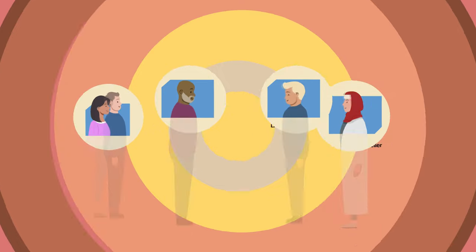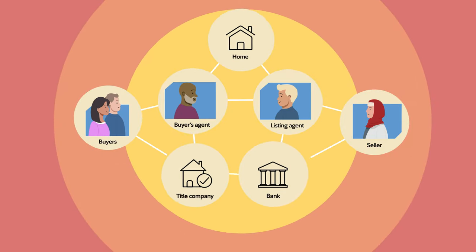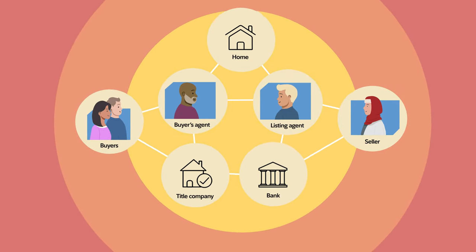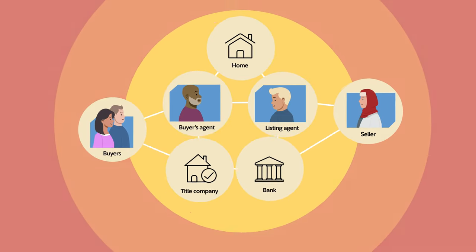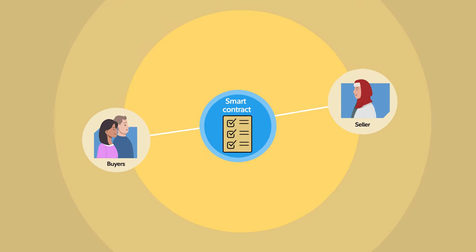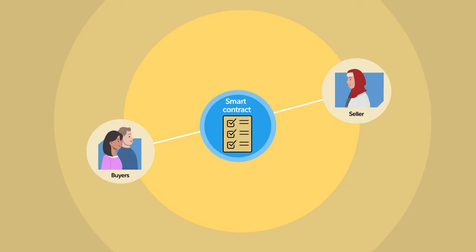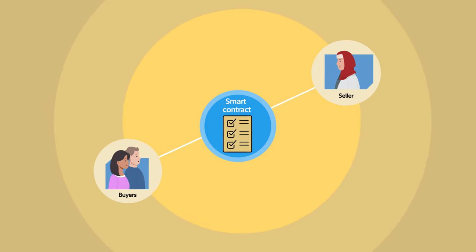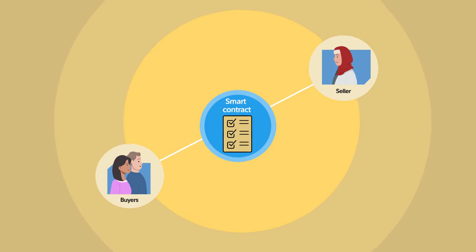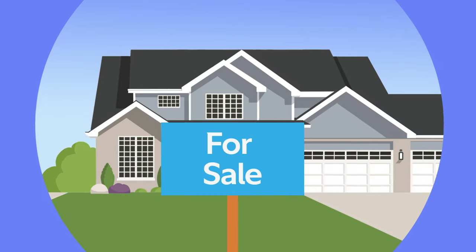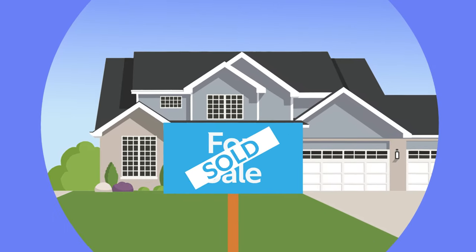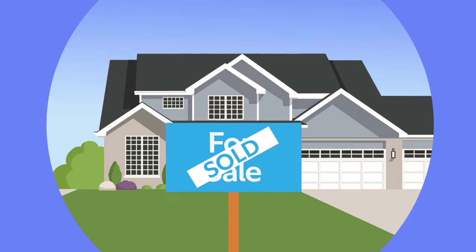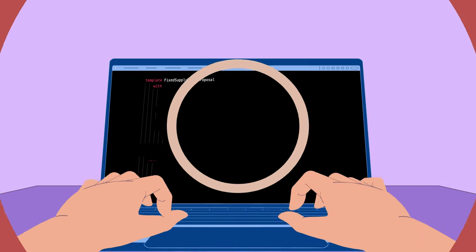For example, say you're buying a house. Traditionally, several middlemen would be involved, such as a bank and multiple real estate agents. Smart contracts could potentially remove all third-party involvement and the need for a lengthy application process, making real estate transactions more cost-effective and efficient.